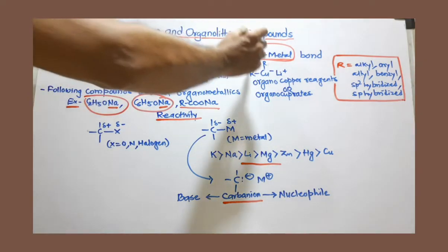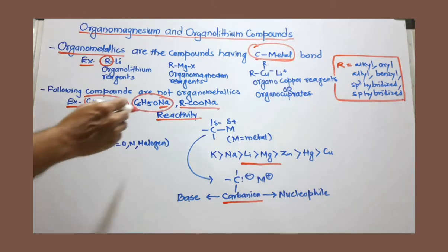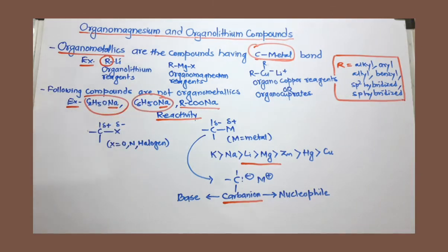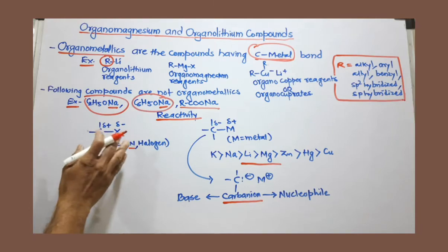Why this carbon-metal bond is unique? That we will discuss under the heading reactivity. Now see here, if carbon is attached to more electronegative atom, like oxygen, nitrogen, or halogen, this bond becomes polar because of more electronegativity difference.